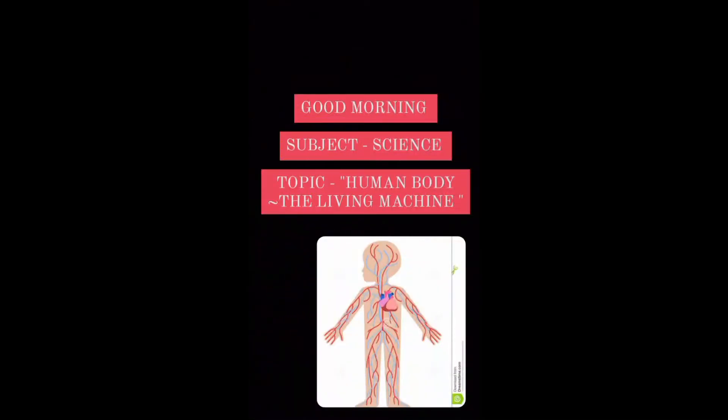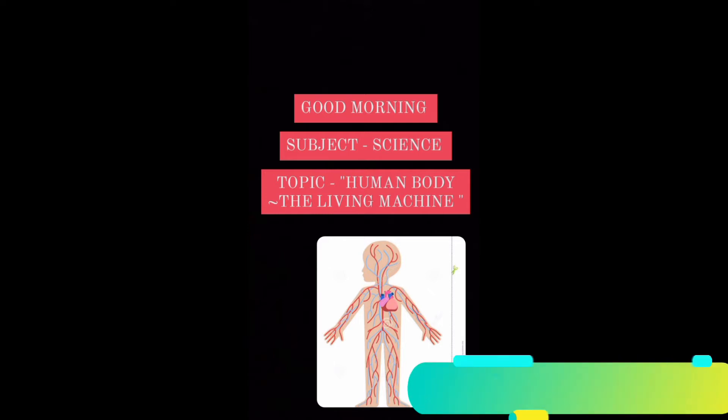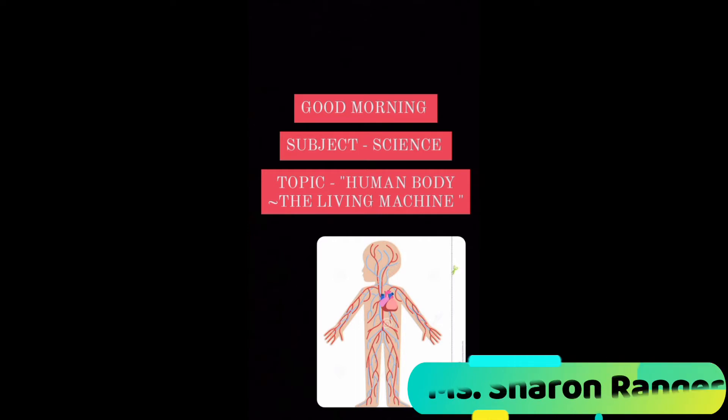Hello and good morning children, I hope you all are fine. In the previous class we have been learning about the human body — the living machine — and we learned about how many organ systems are there in the human body. There are eight important organ systems, and in the previous class we already learned about four. Today in this video we shall learn about the remaining four organ systems in the human body.